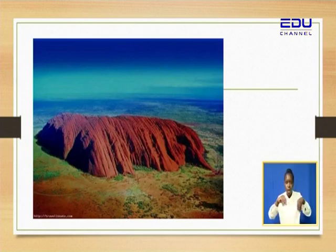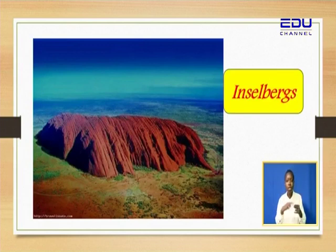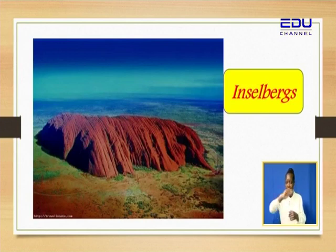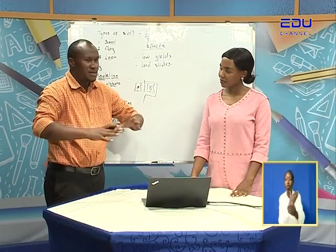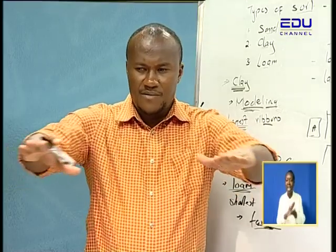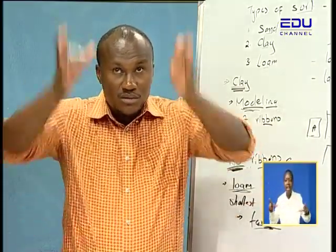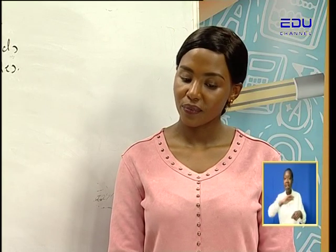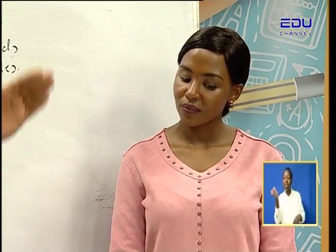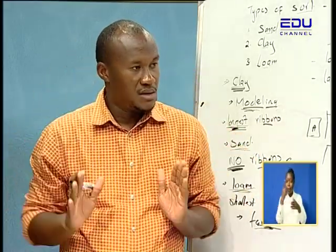We learn this in social studies — we call that an inselberg. An inselberg is a hill formed due to erosion. You find a very flat land, very nice land, but you just find a stone — it may look like a mountain. That's a hill known as an inselberg.